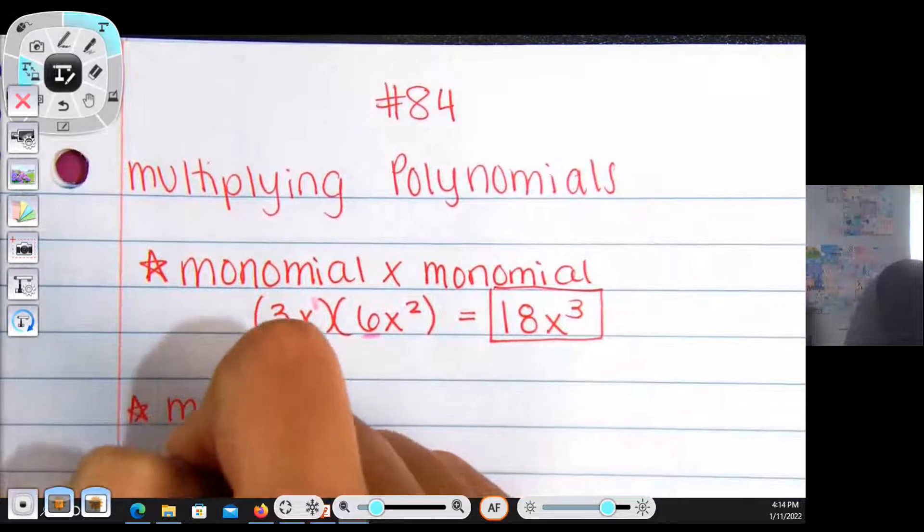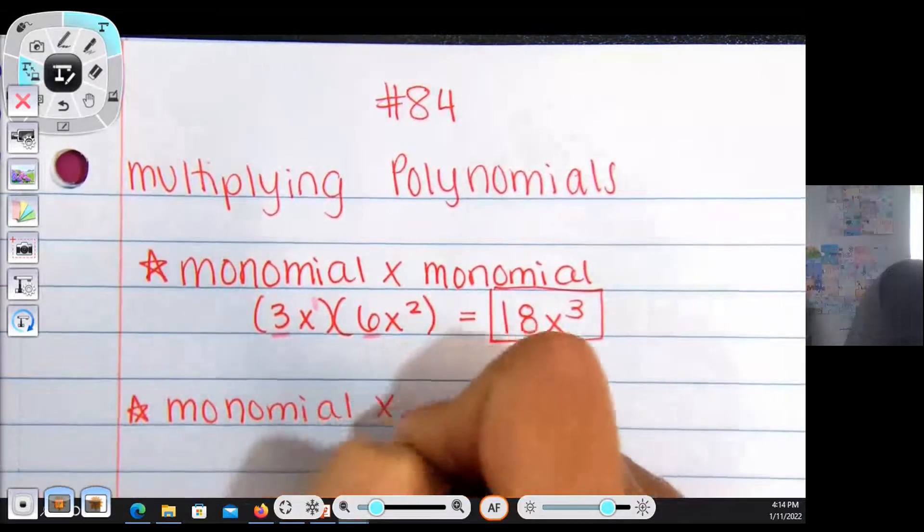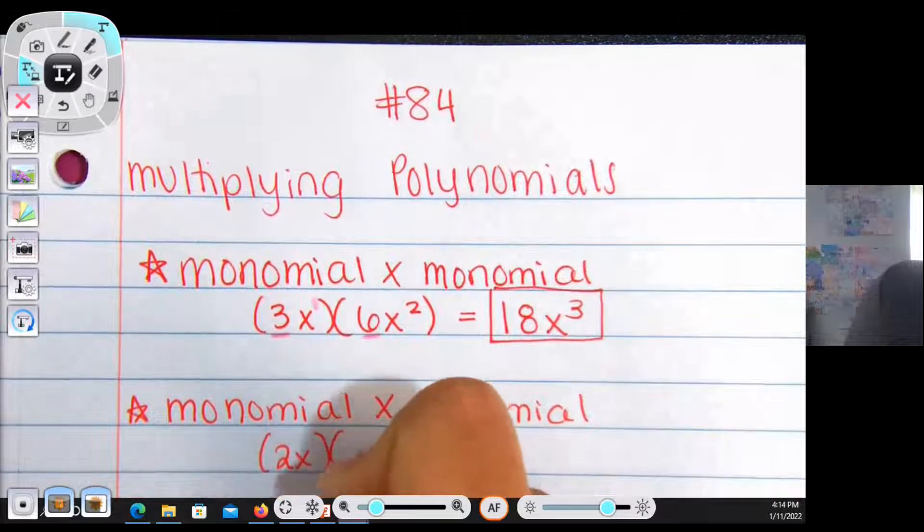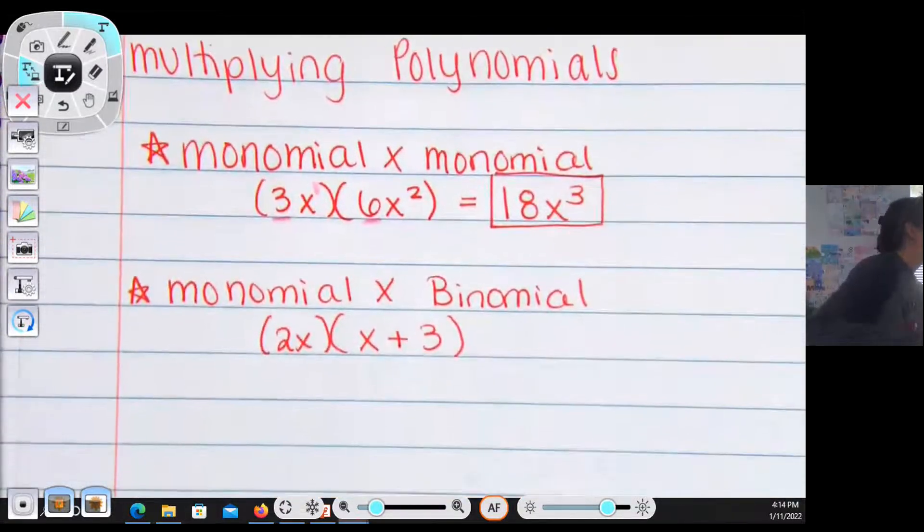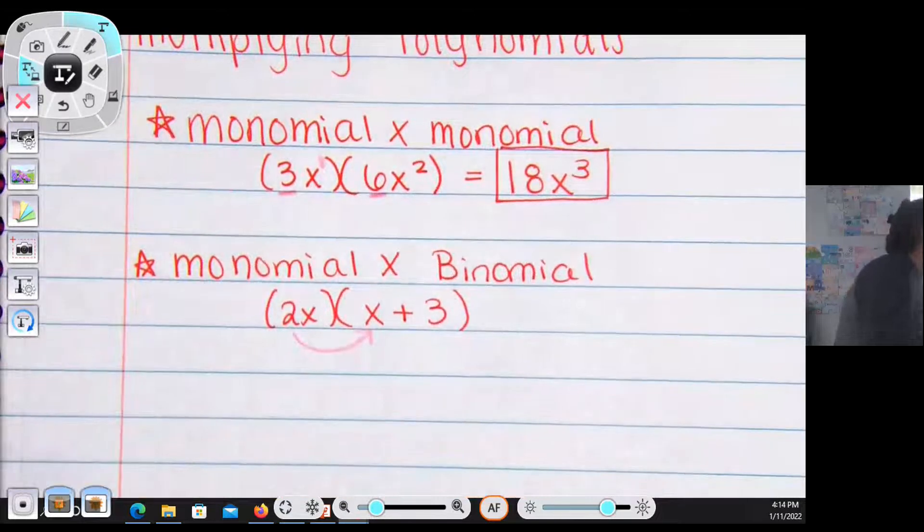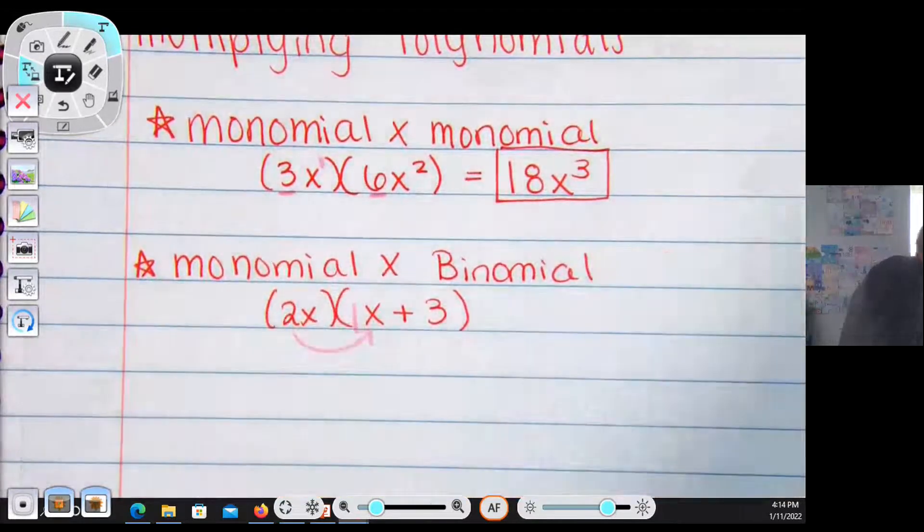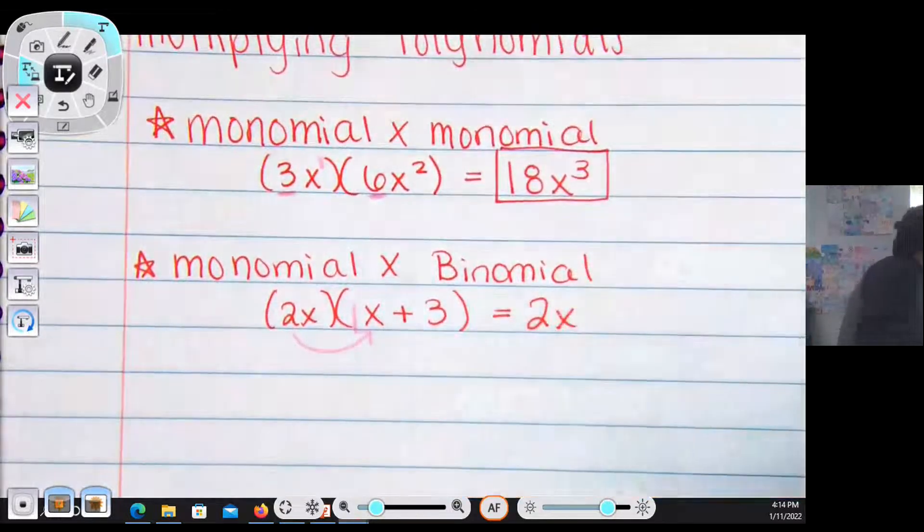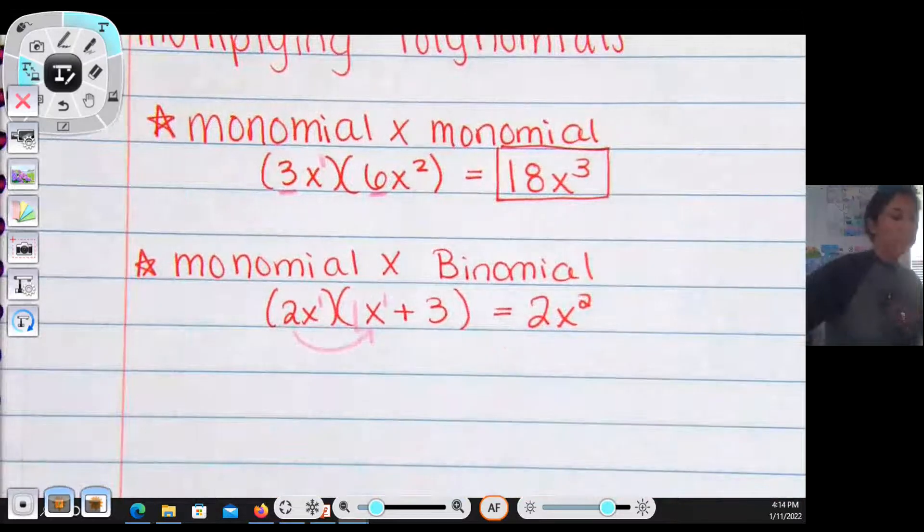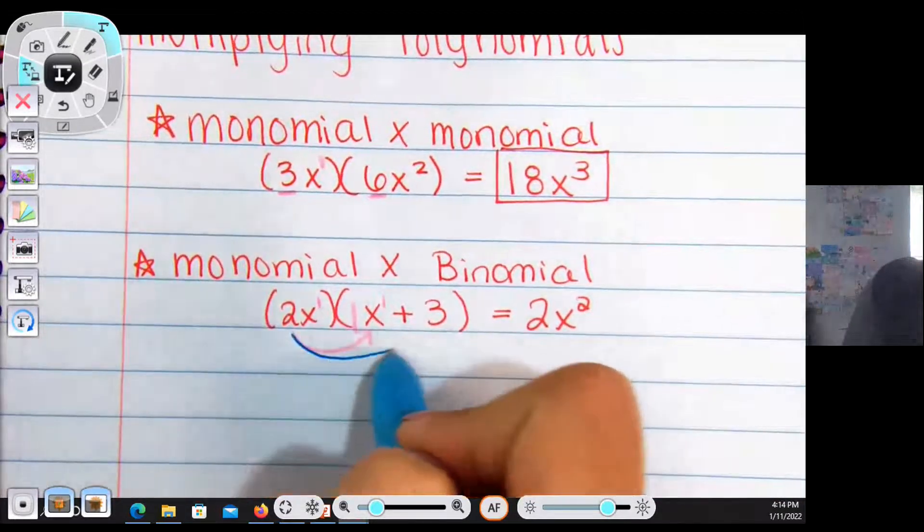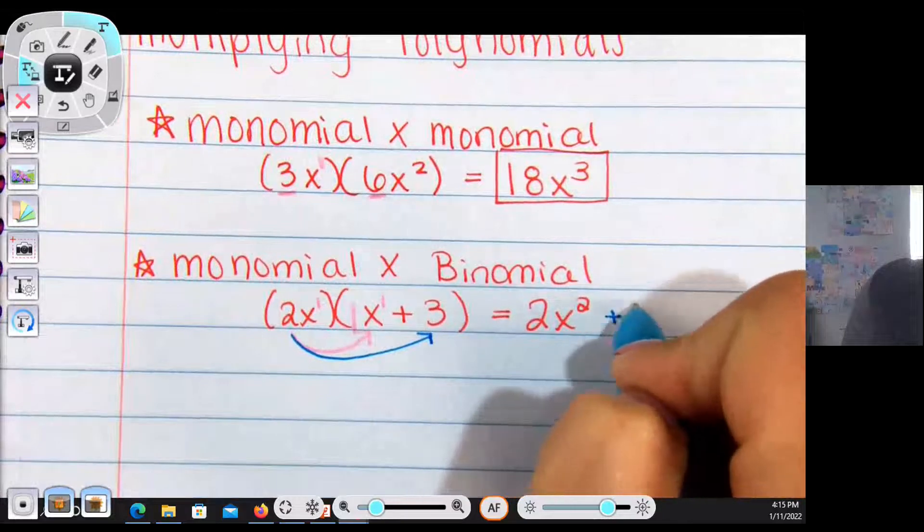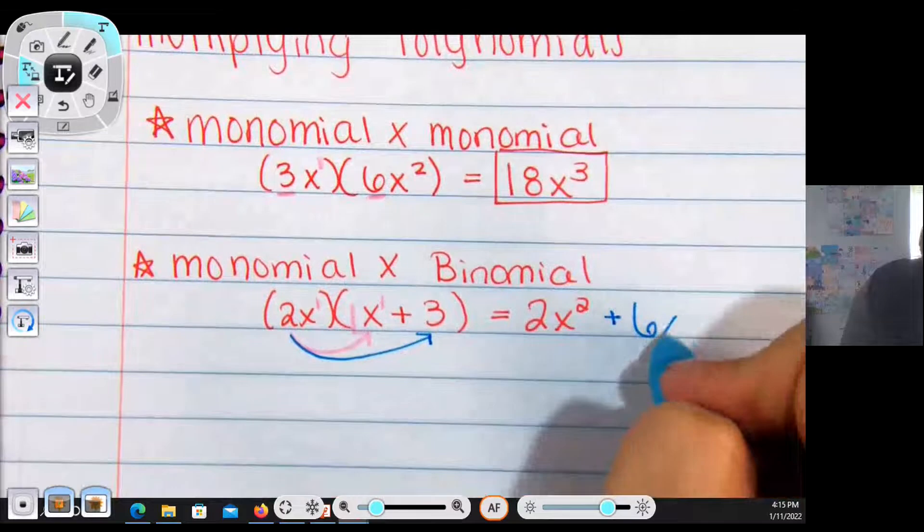Now I'm going to do a monomial times a binomial. That's going to be a 1 term like 2x multiplied by a binomial like x plus 3. Binomial means 2 terms. This is basically like the distributive property, 2x times x. The coefficient is 1, 1 times 2 is going to give me 2. Keep the x and figure out how many x's I'm going to have. 1 plus 1 is going to make a total of 2. Then I'm going to have to distribute this also to the second term, it's like the distributive property. 2x times 3. I multiply the coefficients, which is 2 times 3, which makes positive 6, and I only have 1x. This has no x, so that's my answer.